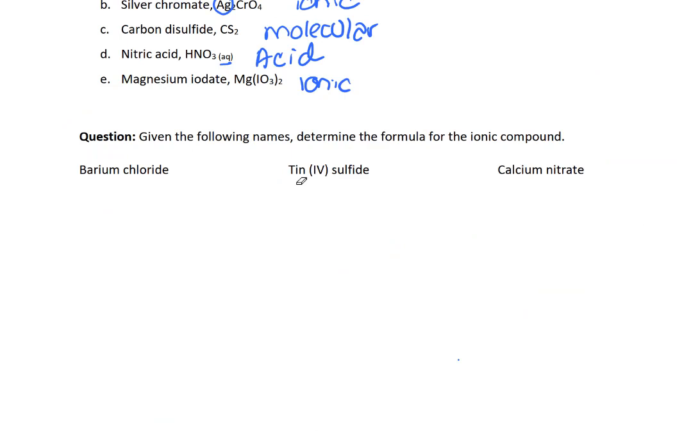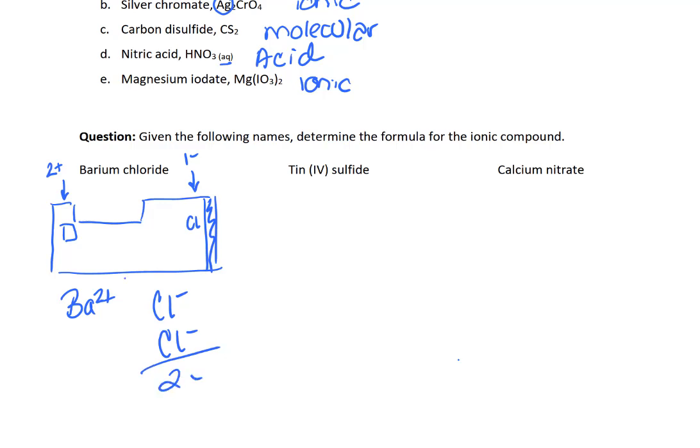All right, so for this question you are given the names and you're going to figure out the formula for the ionic compound. So what you need to make sure that you're capable of doing is that you're looking at a periodic table and you know which columns have particular charges. So if we look at barium chloride and I draw a little kind of mini periodic table here, barium is somewhere over here in group two which always forms a two plus charge. Whereas chloride is over here right before the noble gases and always forms a one minus charge. The goal is going to be to cancel out these charges.